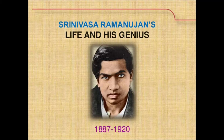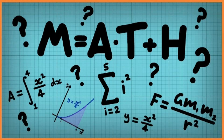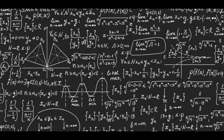In high school he devoured mathematics and discovered new theorems. In 1903 he read A Synopsis of Elementary Results in Pure and Applied Mathematics by G. S. Carr, which was instrumental in his future discoveries.